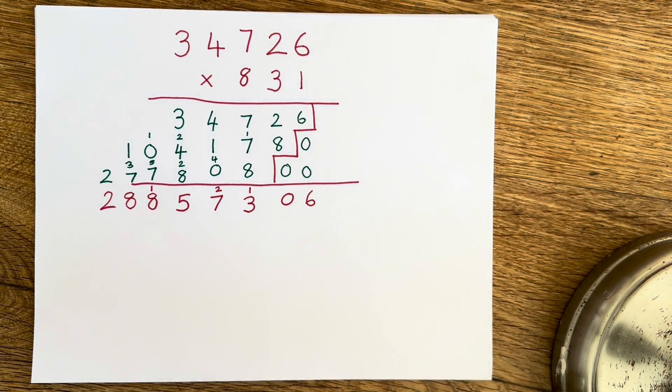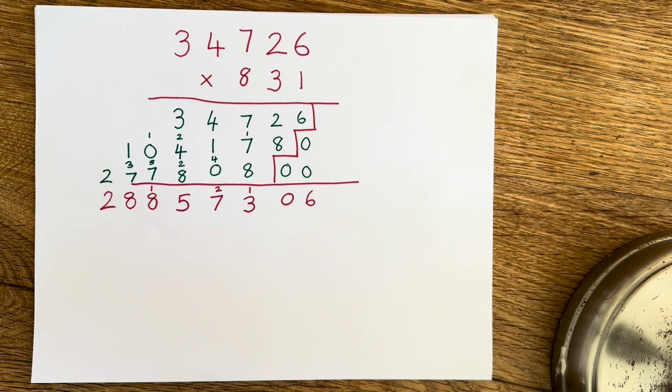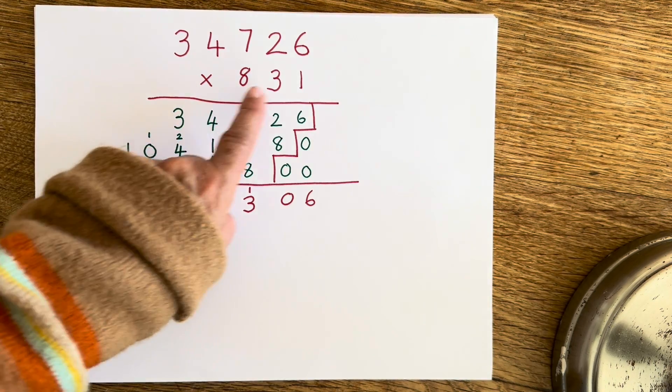Okay, so I have done another problem here, a long multiplication problem, and I'm about to cast out nines to see whether I got the problem correct. As you can see, I've done my long multiplication. I've multiplied the 831 by the 34726.